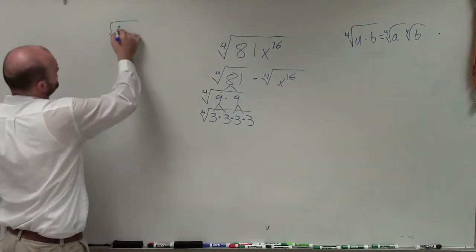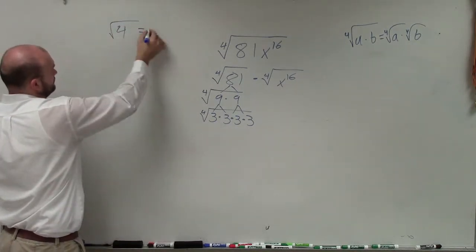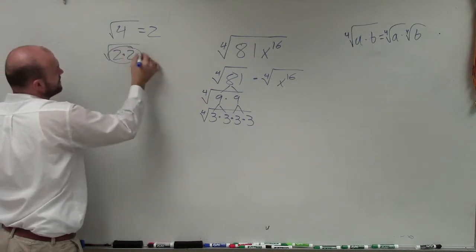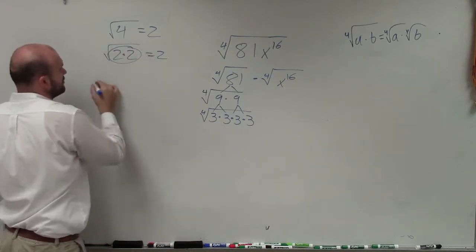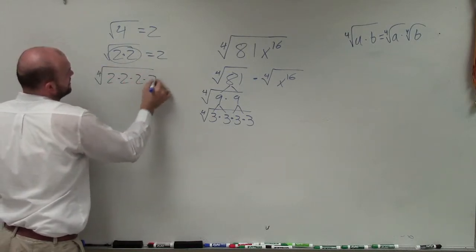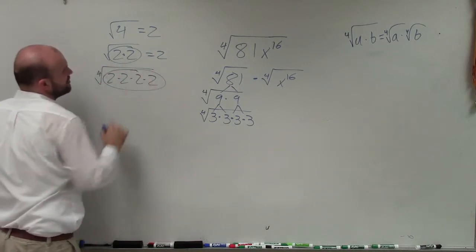Now, when taking the square root of a number, for instance 4, we know that's 2. But with square roots, you're looking for pairs of numbers to pull out. So when you're looking into the fourth root of 2 times 2 times 2 times 2, you're looking for four numbers that are the same.